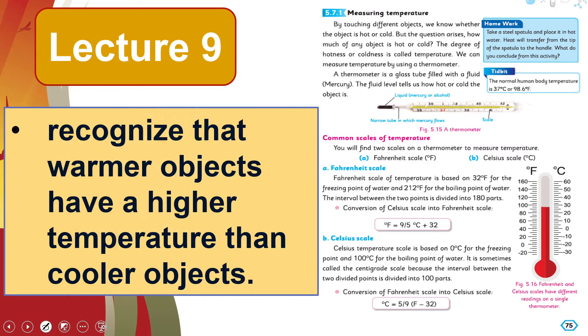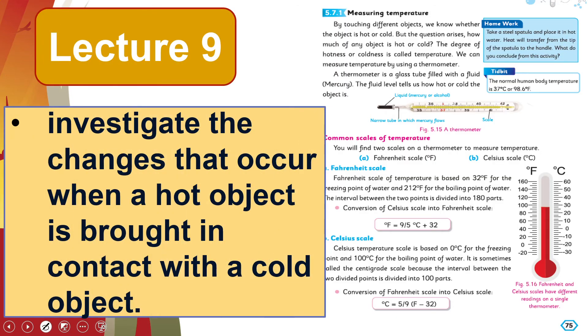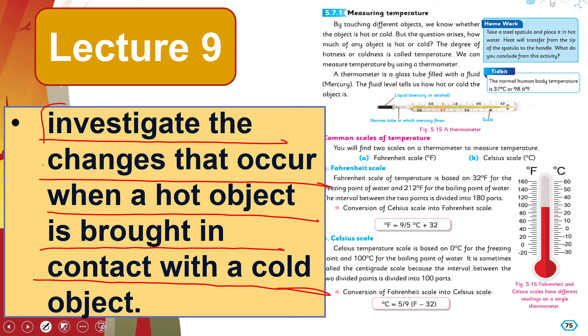In lecture number nine, students will be able to recognize that warmer objects have a higher temperature than cooler objects. So my dear students, heat is also a form of energy, and how it transfers from one place to another, how temperature differs between cooler objects and warmer objects, we will measure on a thermometer. Students will be able to investigate the changes that occur when a hot object is brought in contact with a cold object. So when we bring a hot object near a cold object, the temperature difference that results, we will discuss in lecture number nine.